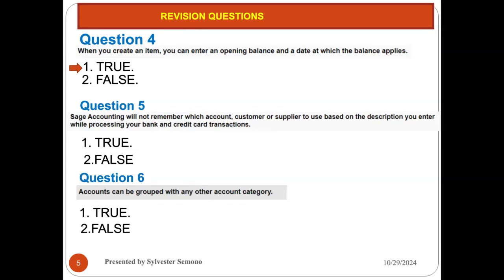Now, Sage Accounting will not remember which account, customer, or supplier to use based on the description you enter while processing your bank and credit card. I agree with you, it will remember. Because you must read carefully. If you're not reading carefully, you think it says it will remember, you'll say true. But it will not, which is false. It will remember.